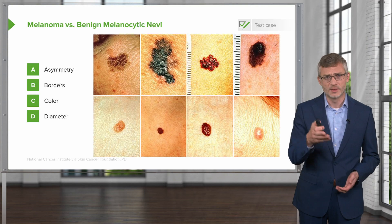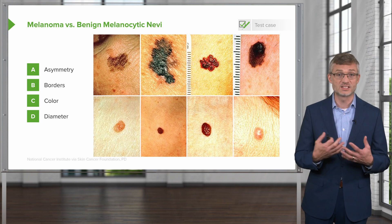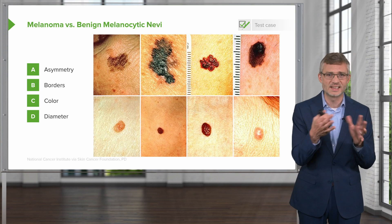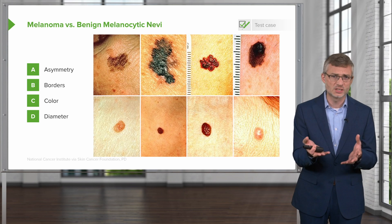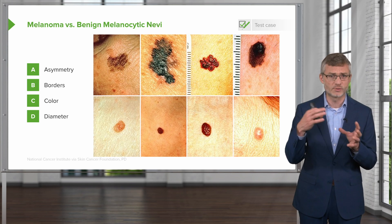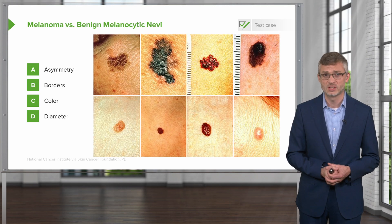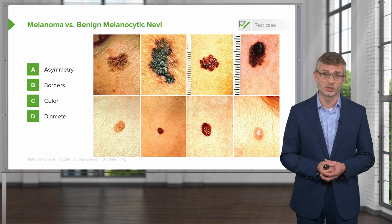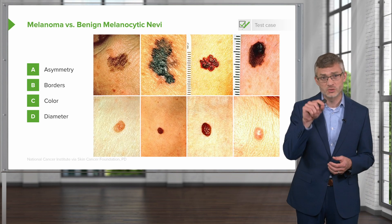Looking at the first column, on the top we have evidence of asymmetry. This is a lesion which has a lot of asymmetry — it's not the same on one side as it is on the other. The benign lesion underneath it is pretty much symmetric from one side to the other. The second feature would be irregular borders. That second column has dramatically irregular borders compared with the one underneath it, which is almost a perfect circle.